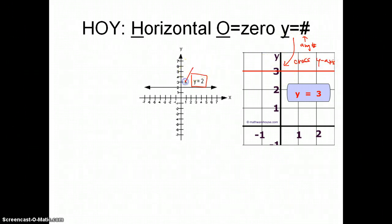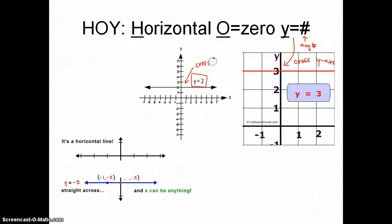Right here, it crosses at the y axis. And here's another example. And this one crosses at negative 2. You can see the equation right there. And that's Hoy.